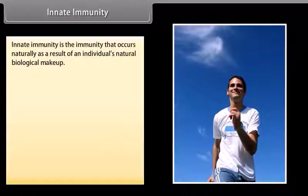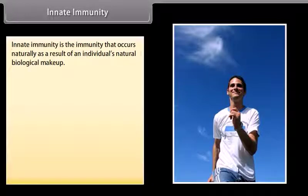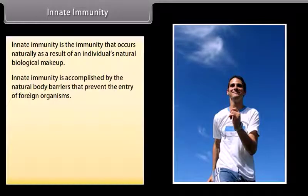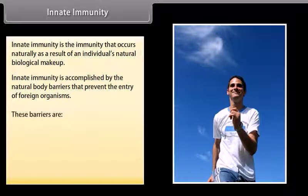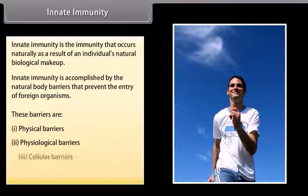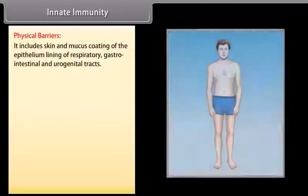Innate immunity is the immunity that occurs naturally as a result of an individual's natural biological makeup. Innate immunity is accomplished by the natural body barriers that prevent the entry of foreign organisms. These barriers are: physical barriers, physiological barriers, cellular barriers, and cytokine barriers. Physical barriers include skin and mucus coating of the epithelium lining.